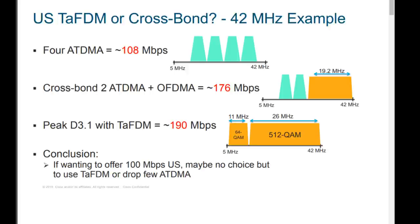To safely provide 100 Mbps service upstream, you'd really want a 200 Mbps aggregate pipe. The only way to do that is DOCSIS 3.1 or eight-channel upstream bonding, but you don't have the spectrum for eight-channel. Four ATDMA channels at 6.4 MHz each, running 64 QAM, gives you an aggregate of 108 Mbps. These are SCQAM — single carrier QAM — channels in the upstream.